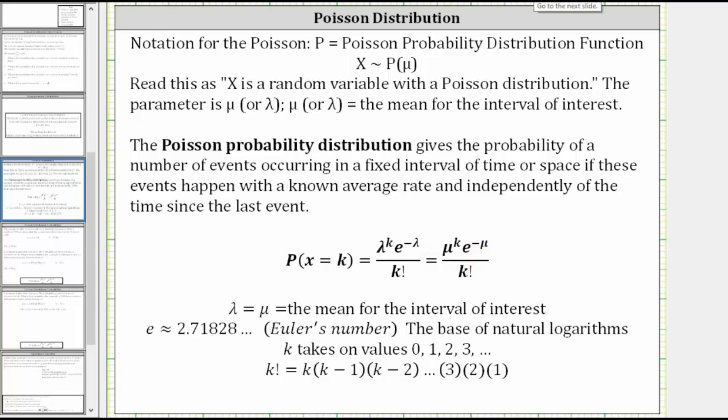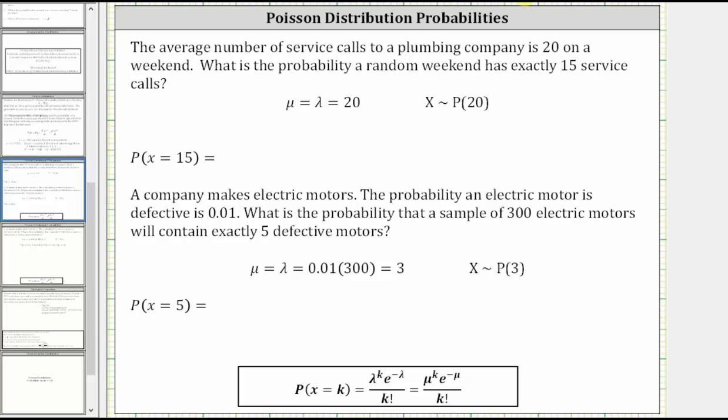So going back to our example, we want to find the probability that x is equal to 15. Using the formula, we use mu equals 20 and k equals 15. In the numerator, we have mu to the power of k times e to the power of negative mu. Well, mu to the power of k is the mean raised to the power of 15, or 20 raised to the power of 15. e to the power of negative mu is e to the power of negative 20. The denominator is k factorial, which is 15 factorial.